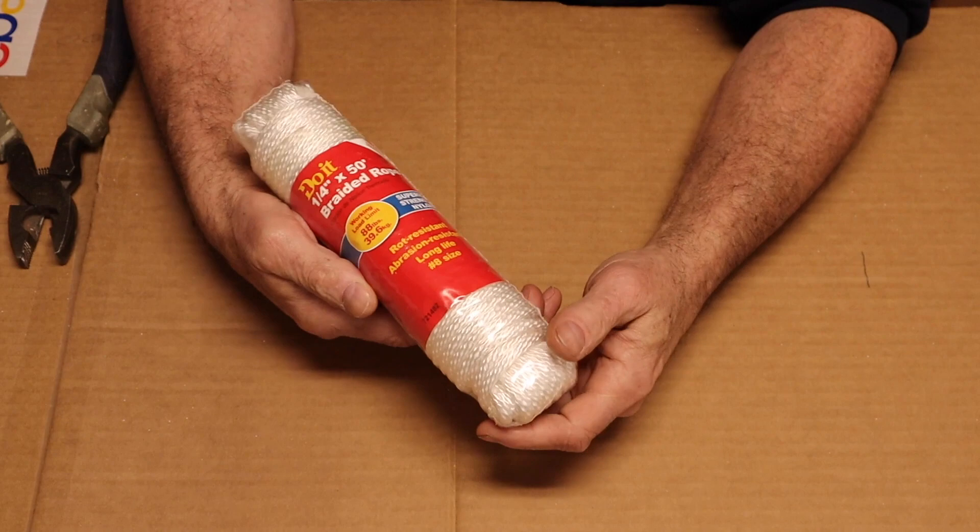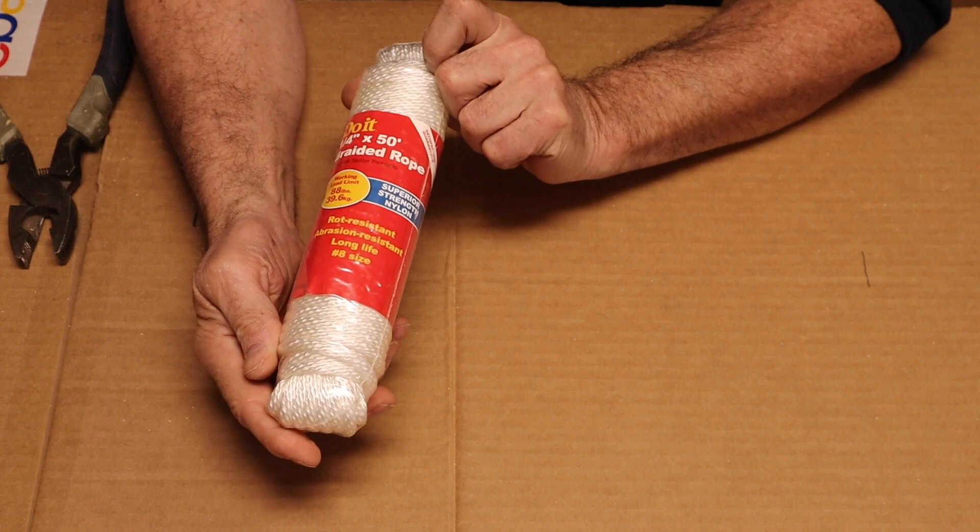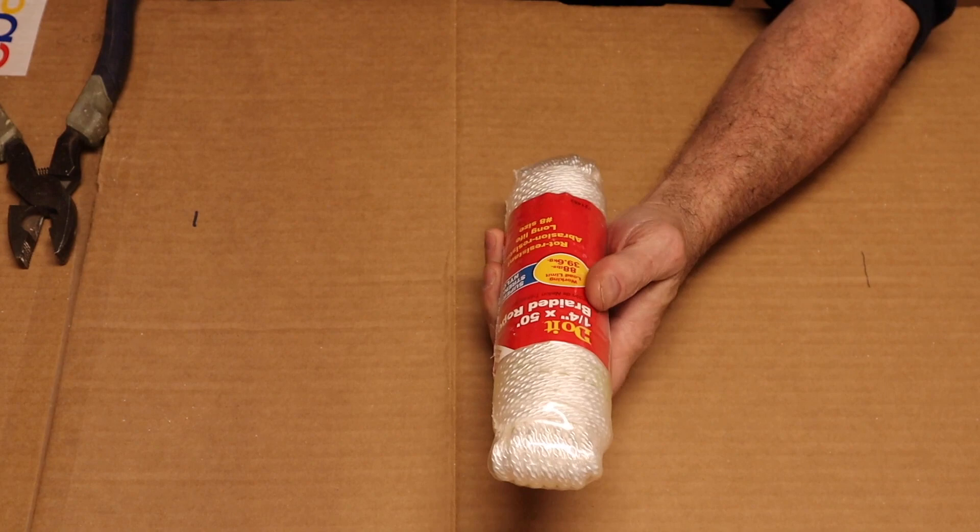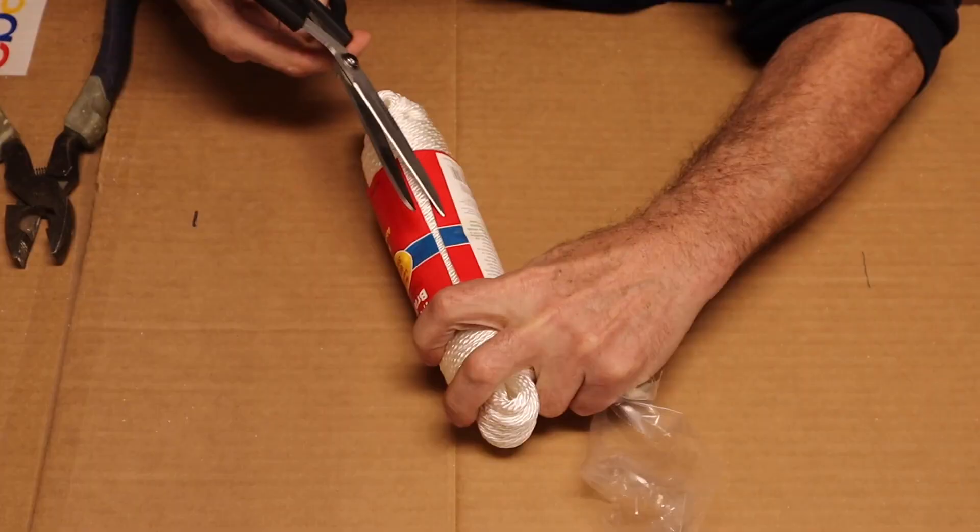All right so I'm going to show you real quick how I make one of these. Here I've got one quarter inch by 50 foot braided rope, superior strength nylon. A 50 foot length of this will cost you about seven bucks and that will give you seven Un-Bungie cords.